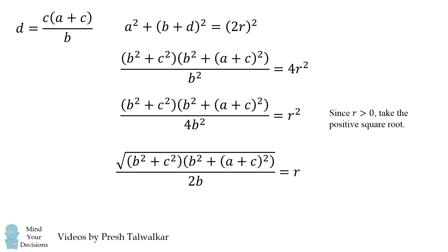So finally, this is our formula for R. It's the square root of the quantity B squared plus C squared times the quantity B squared plus the quantity A plus C squared all over 2B.